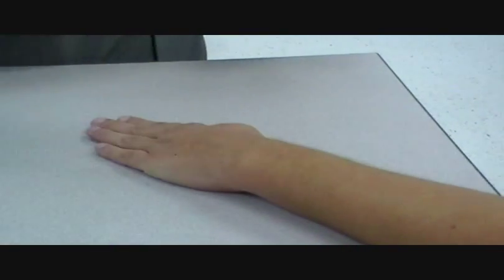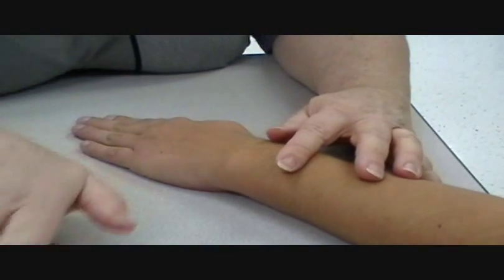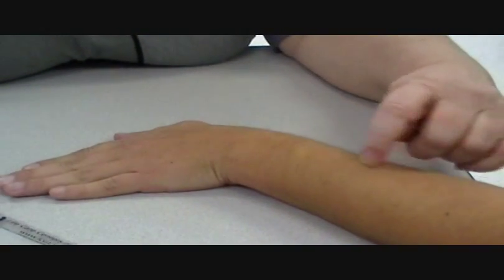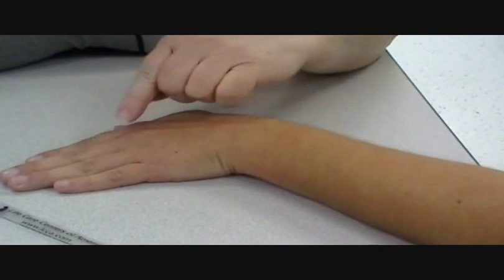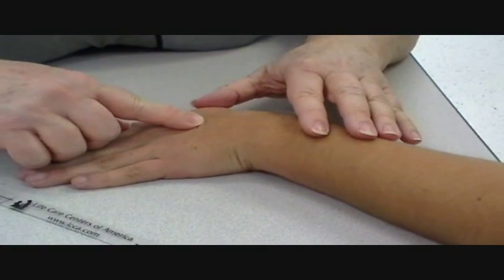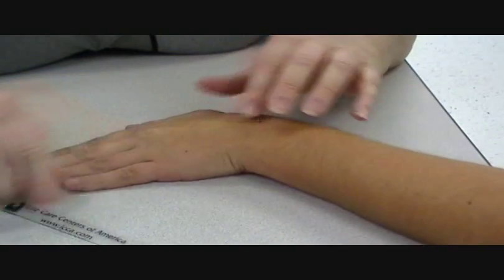Okay, and now what? So now we're going to do radial and ulnar deviation. Go ahead and bend your hand this way. So again, line up with the long bones and then along the middle finger metacarpal, which is here.